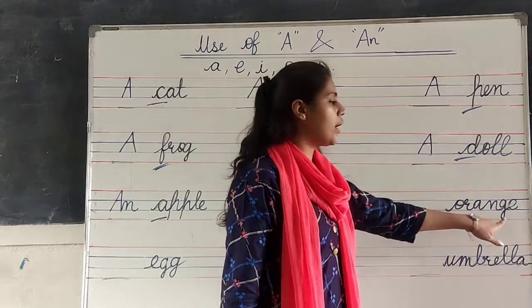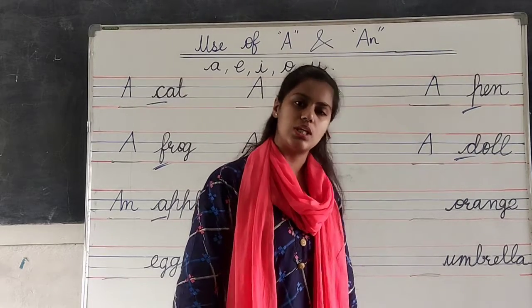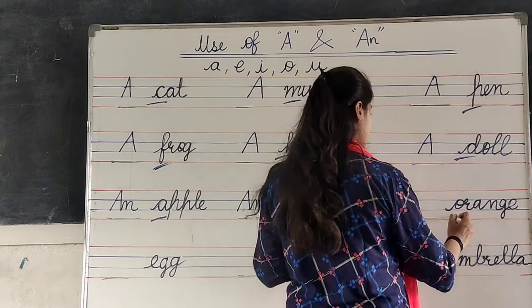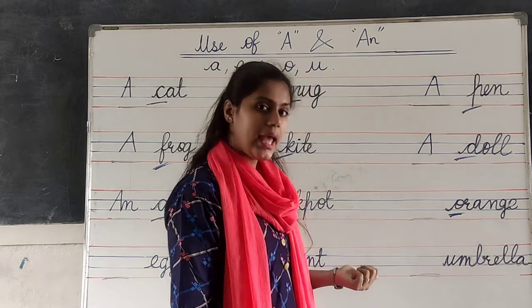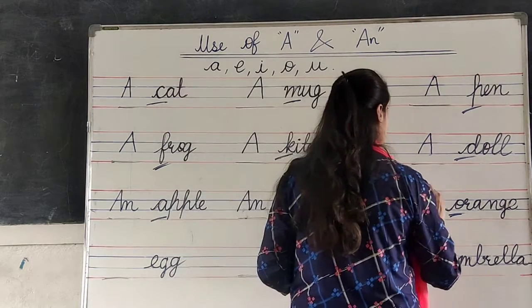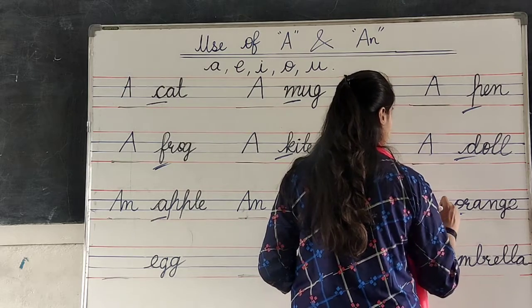Next, orange. O, R, A, N, G, E. First letter is O. Now, we have to write An. Because, first letter is vowel.